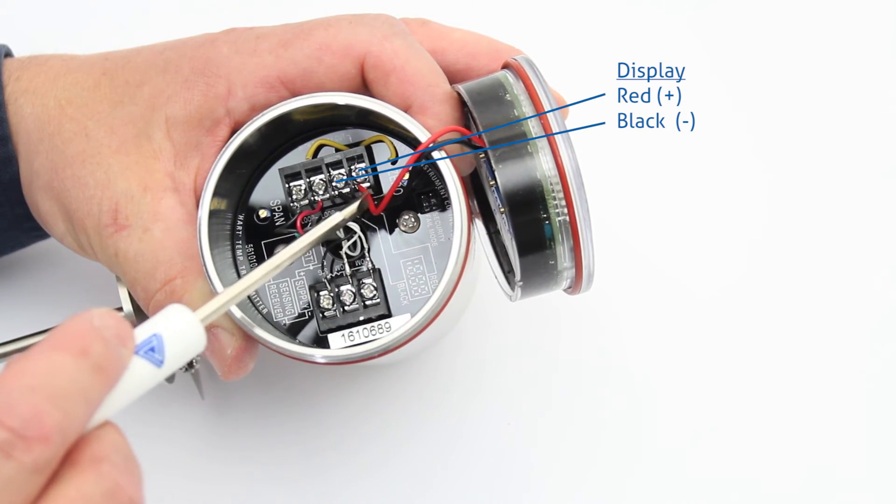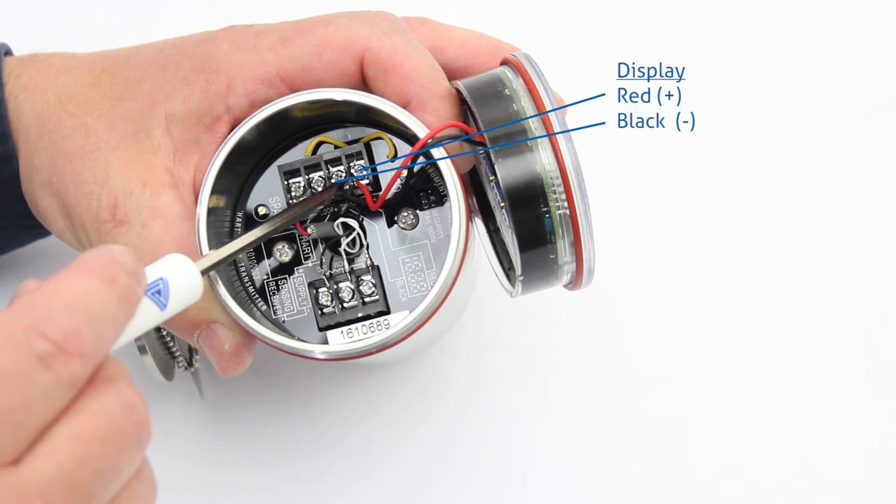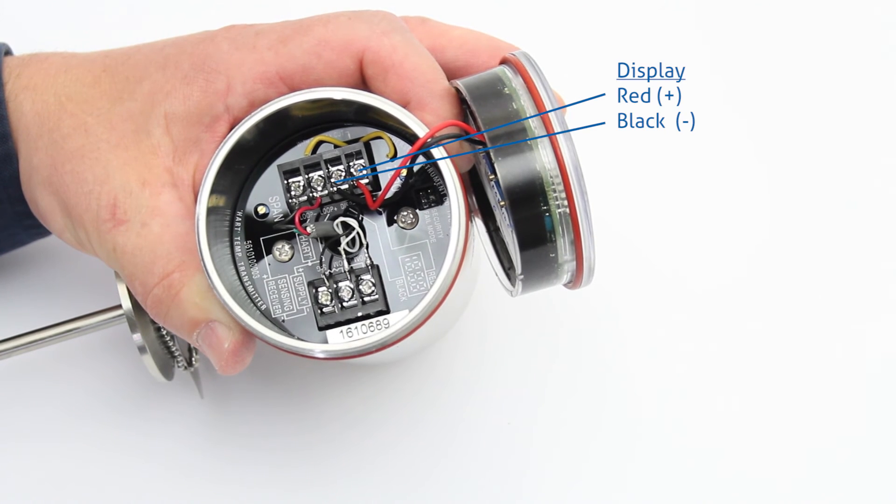The display has a red and a black wire. The red wire gets connected to the display plus terminal and the black wire gets connected to the display minus terminal.